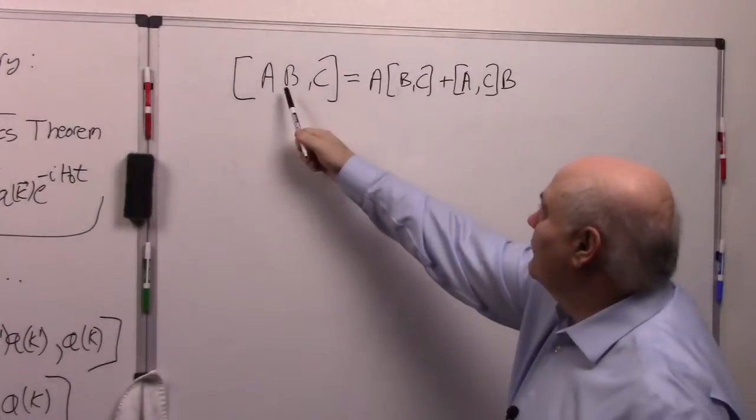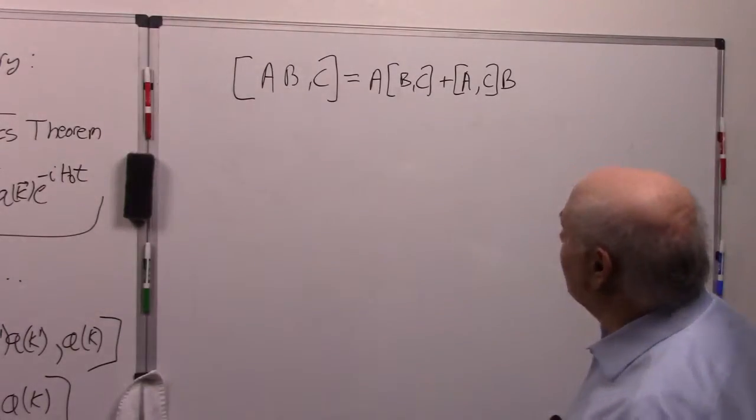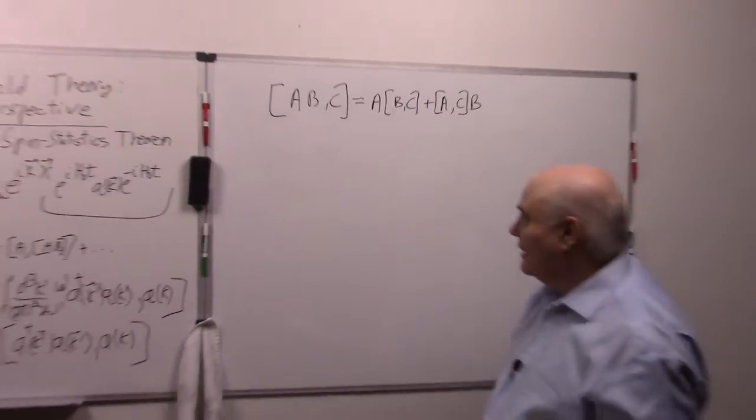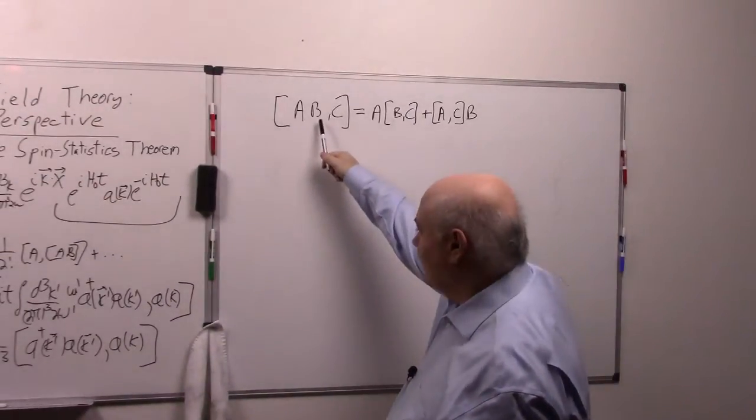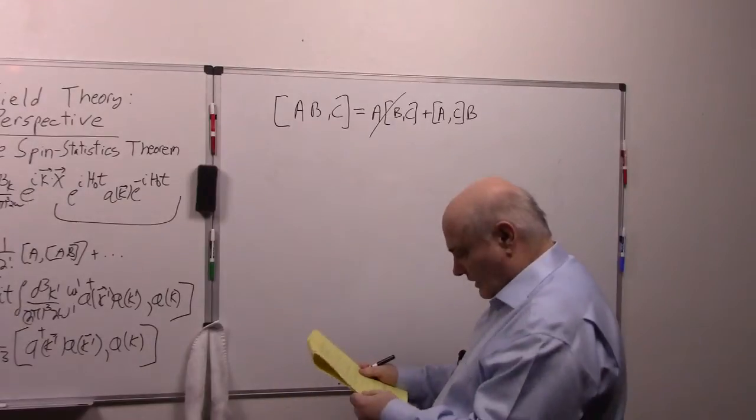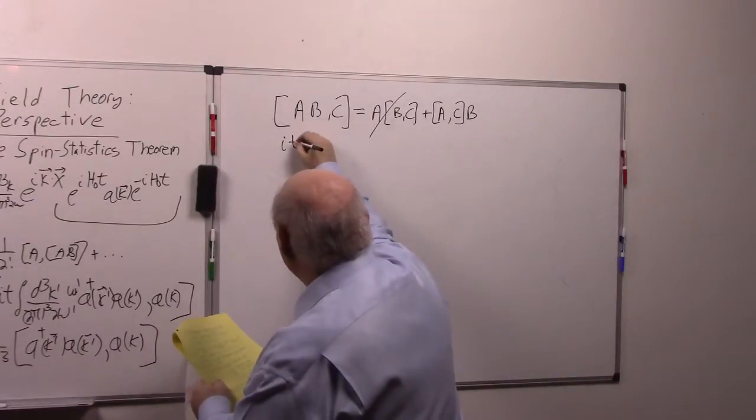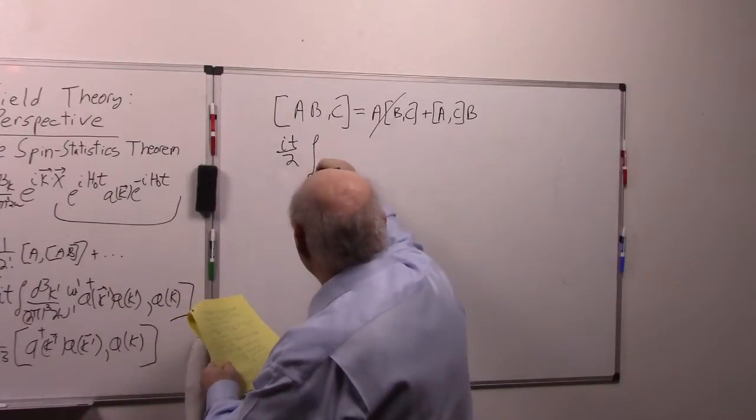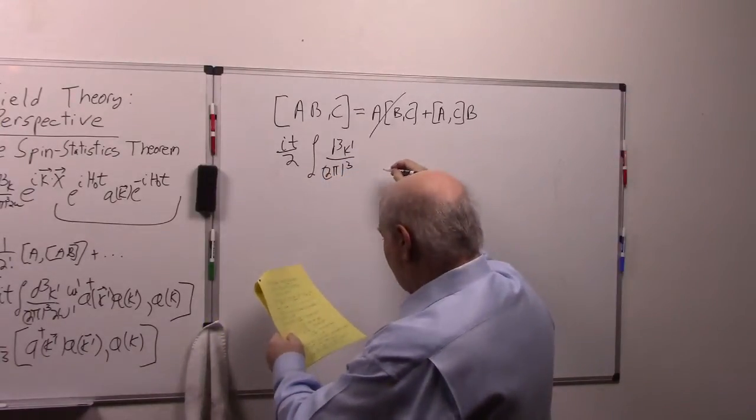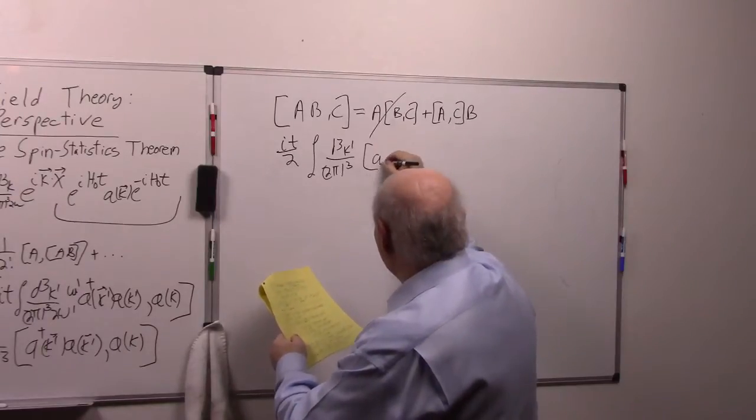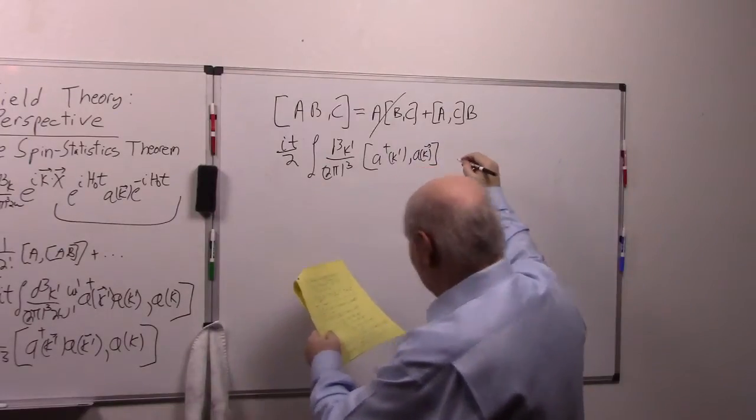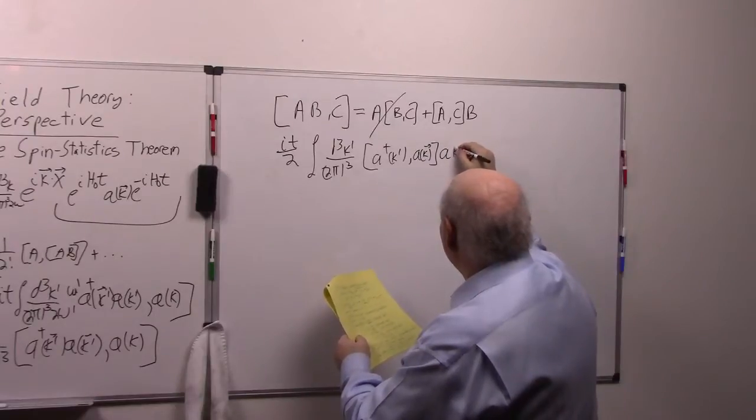You just keep the order on this. One goes outside and then the other one goes outside. Standard identity, can verify in about 10 seconds. So in our case this is A† and these are both A's. So this term won't be present in our case, we'll just have this. So we're going to get IT over 2 integral d³k' over 2π³ times commutator A†(k') comma A(k) times A(k').